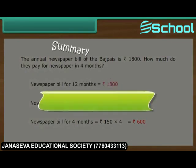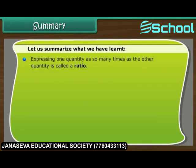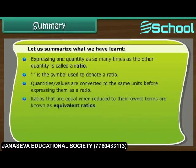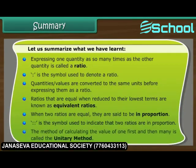Summary. Expressing one quantity as so many times the other quantity is called a ratio. Colon is the symbol used to denote a ratio. Quantities and values are converted to the same units before expressing them as a ratio. Ratios that are equal when reduced to their lowest terms are known as equivalent ratios. When two ratios are equal, they are said to be in proportion. The method of calculating the value of 1 first and then many is called the unitary method.